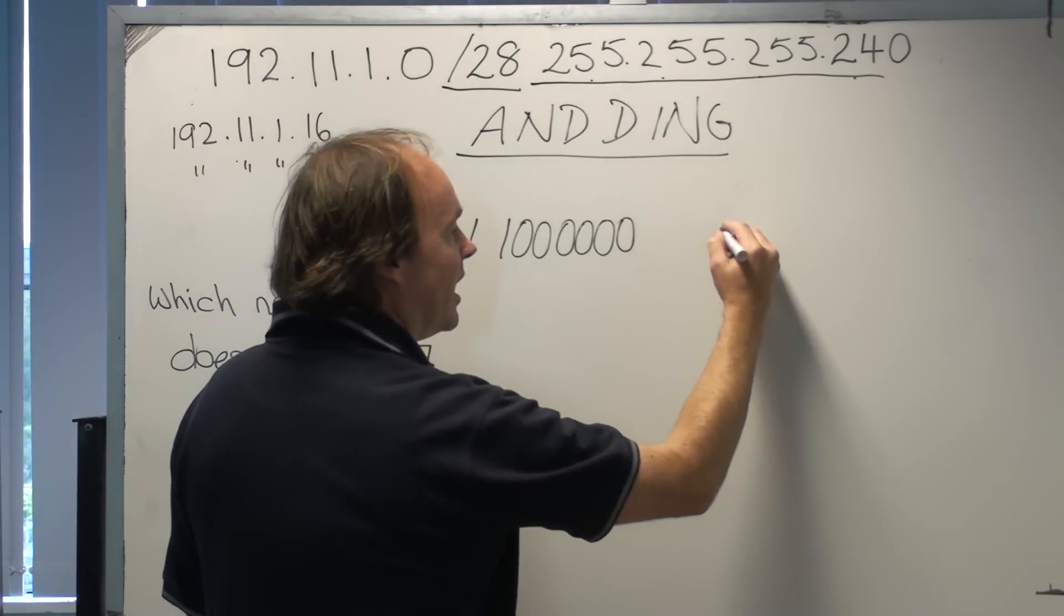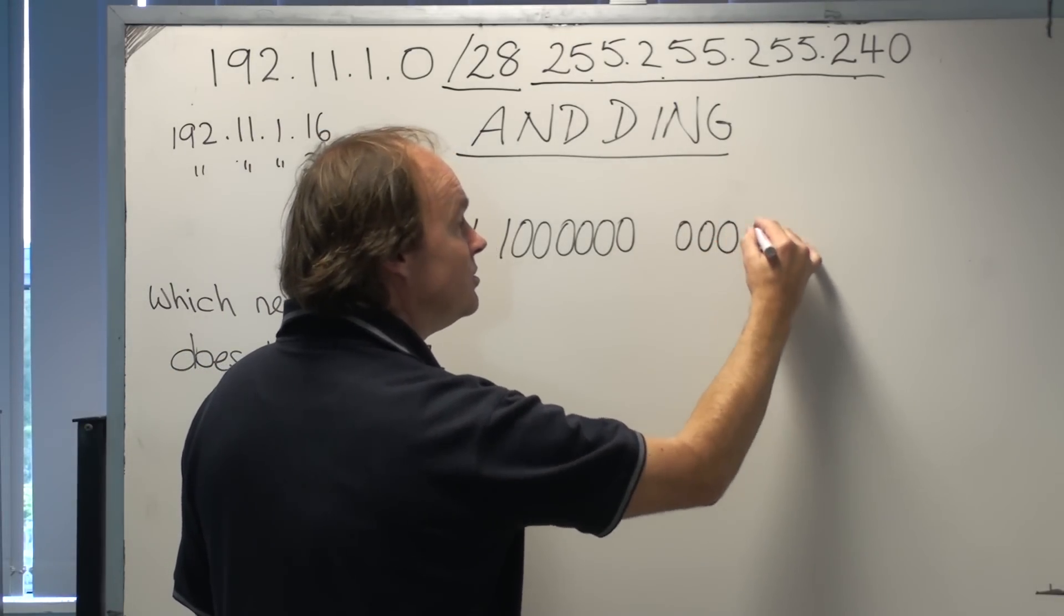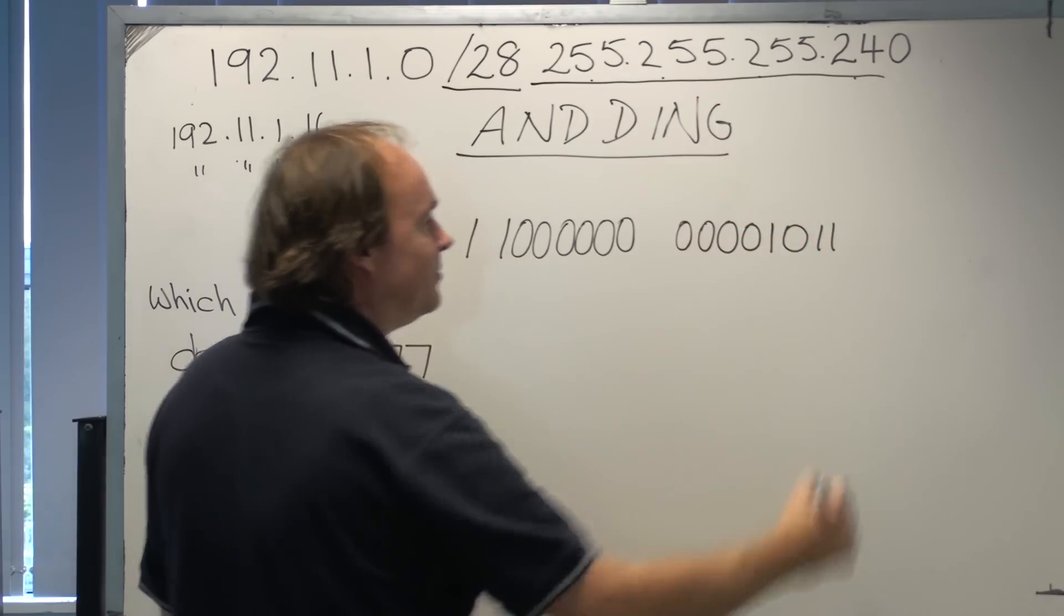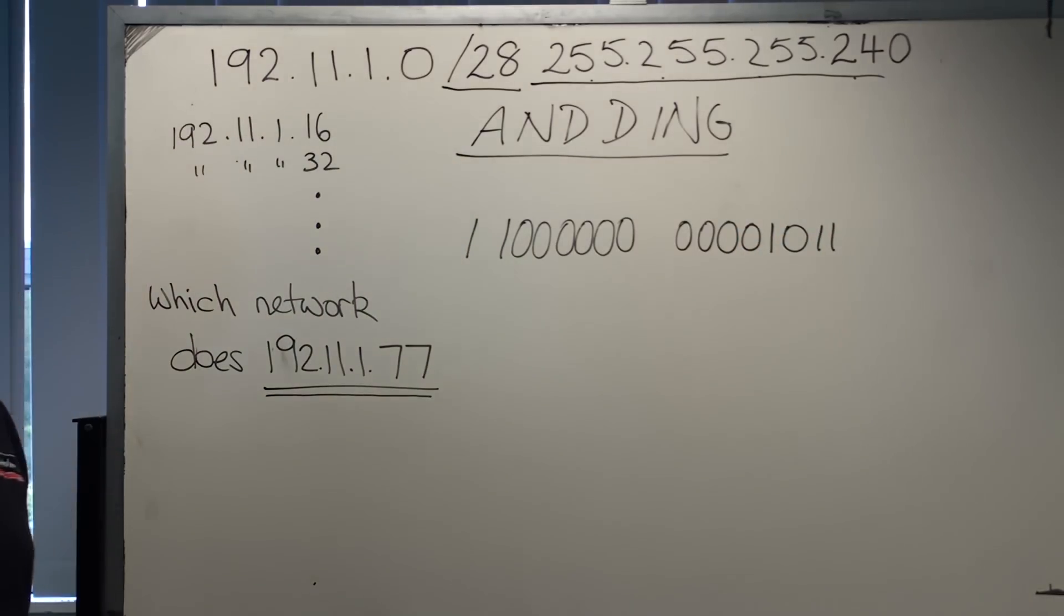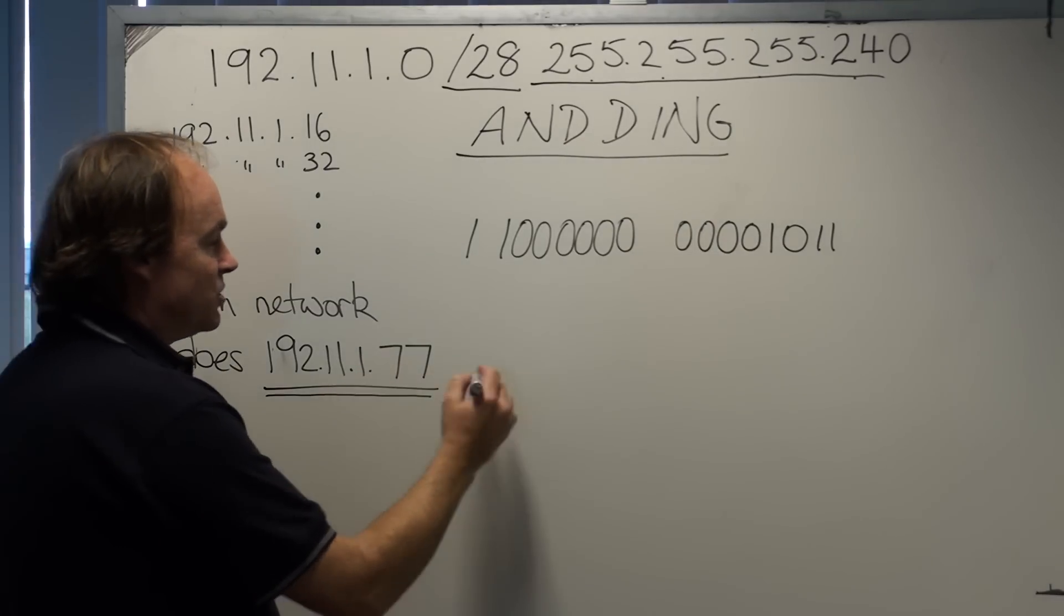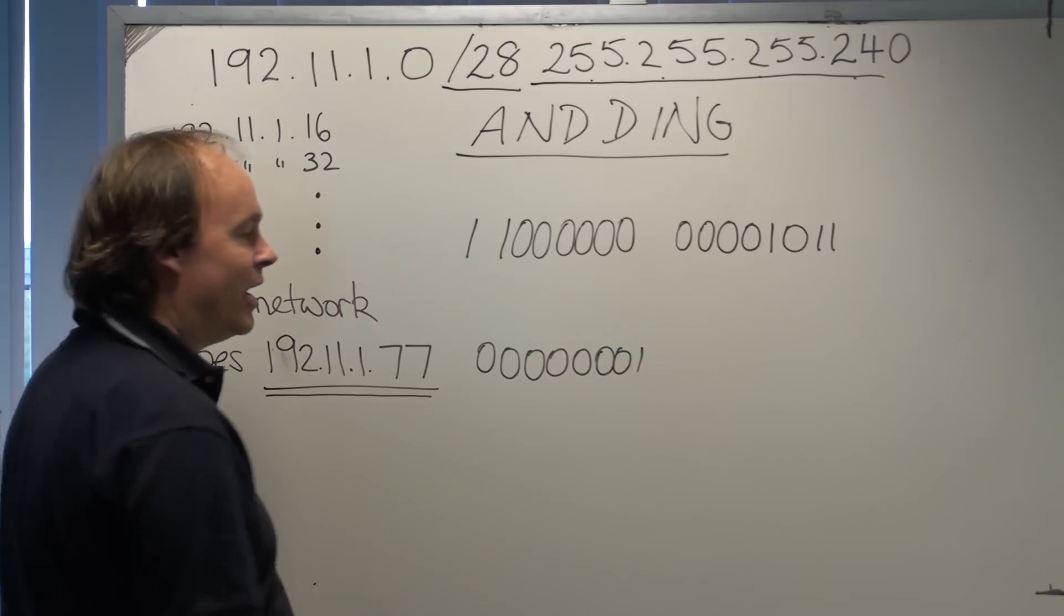11 we know is basically no 128s, no 64s, no 32s, no 16s, but there's an 8, no 4, a 2 and a 1. I'm going to run out of space real quick. So we can see that 1 is simply that in binary.